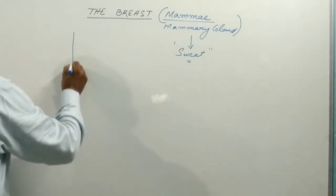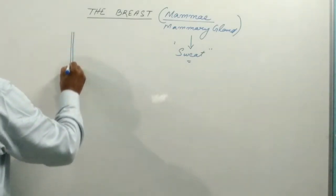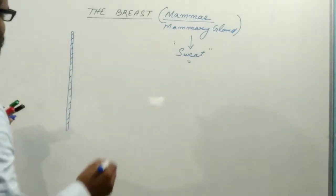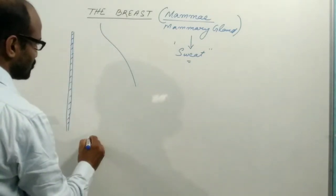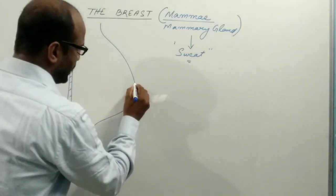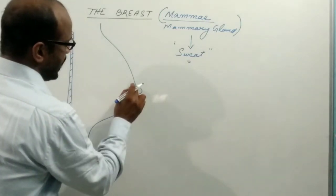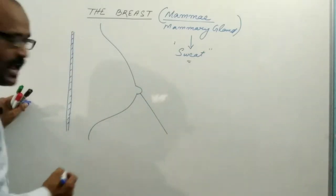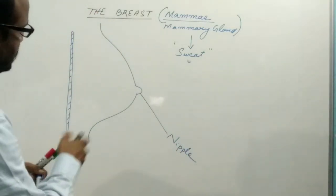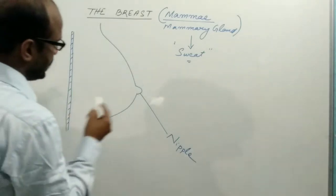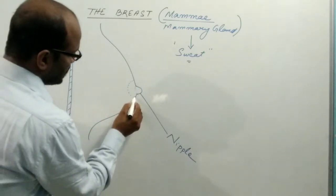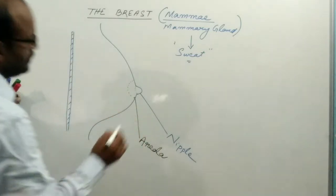The mammary gland actually develops over the thorax on the pectoral muscle. It is prominent and bulging, rounded in structure. It has a central protuberance which is pigmented and known as the nipple. The nipple is surrounded by a pigmented area known as the areola.